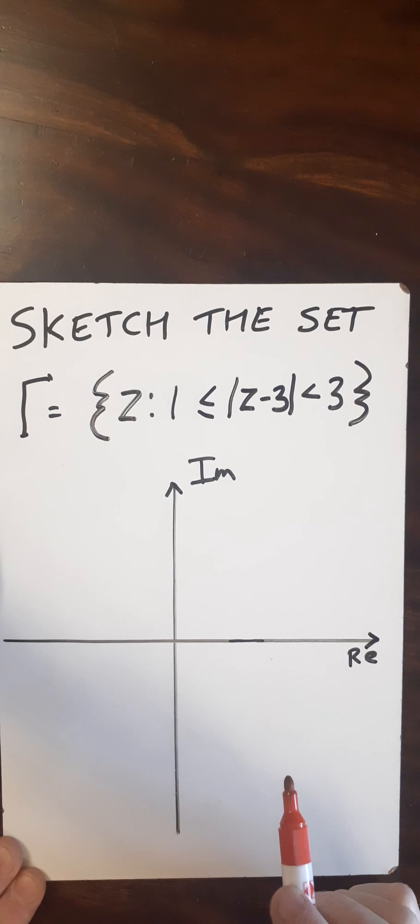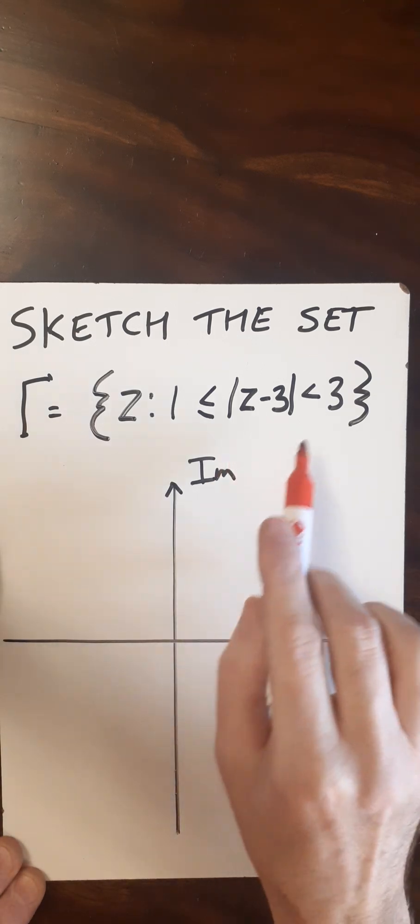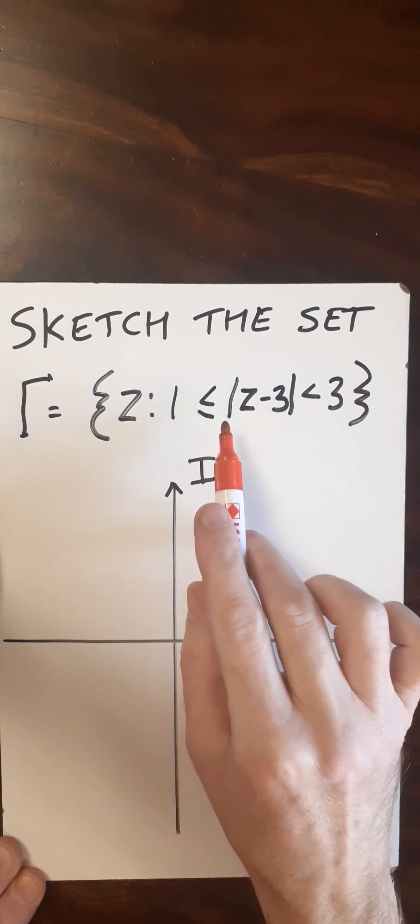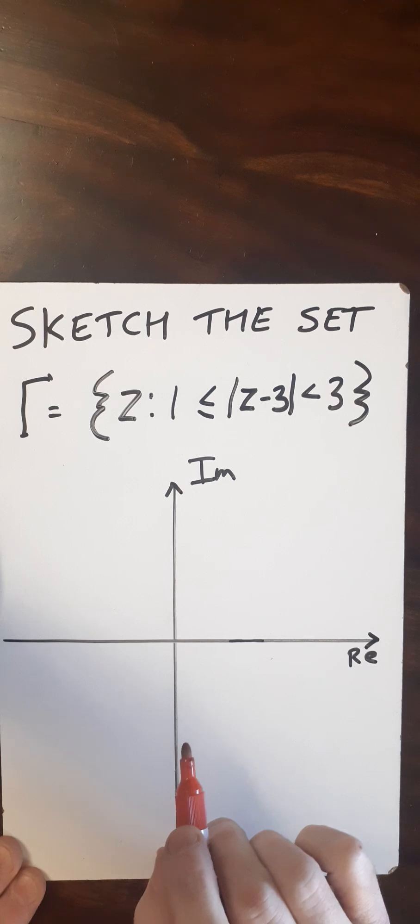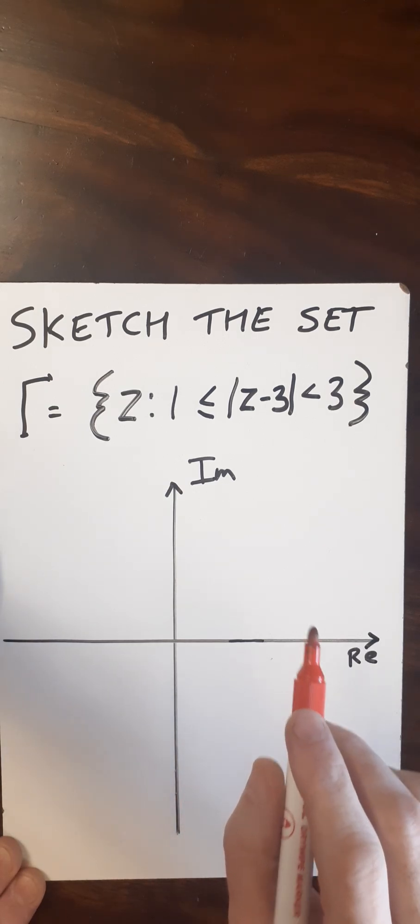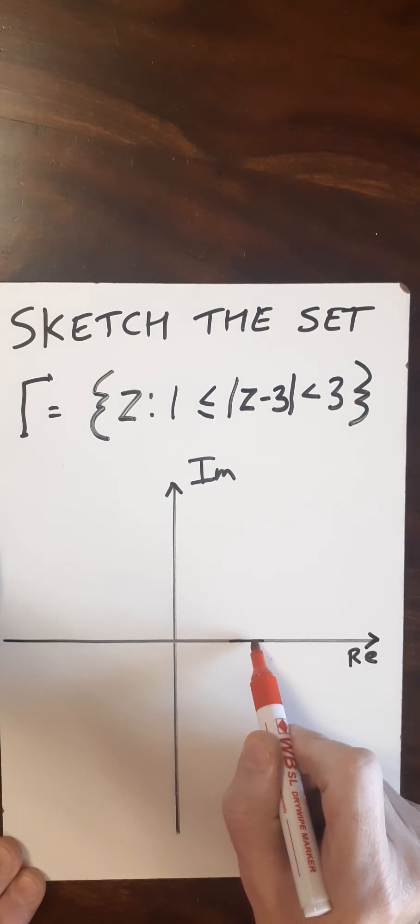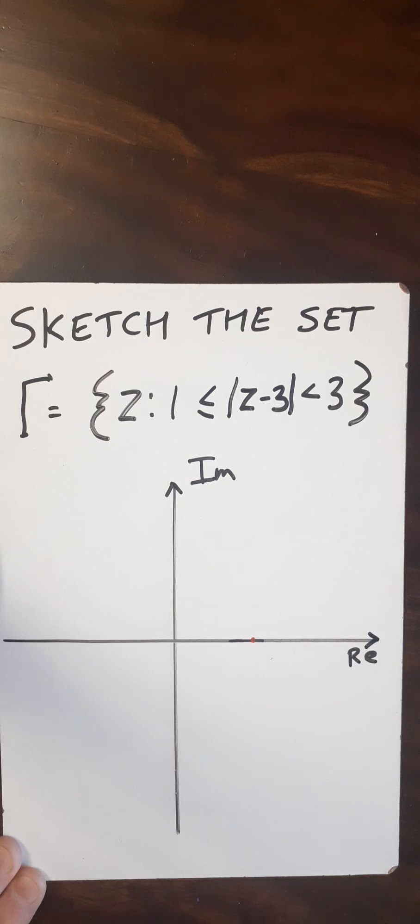First of all, I'm going to mark on here where the center of this would be, because when you get a modulus of z minus three, you're going to create some circles. So z minus three will give us three on the positive real axis. Just mark that there with a little dot.